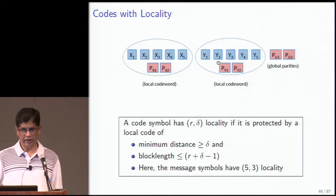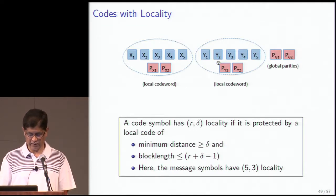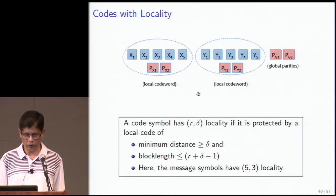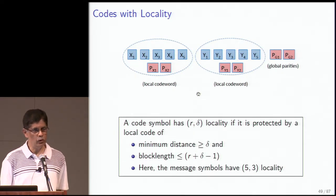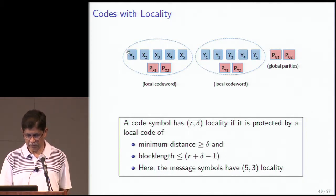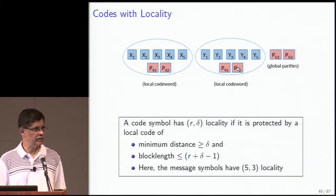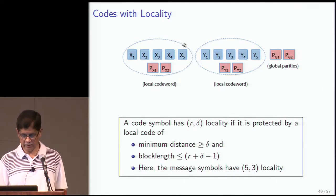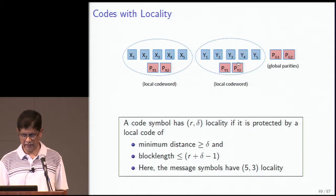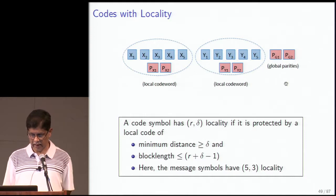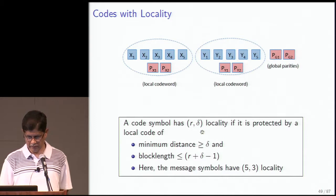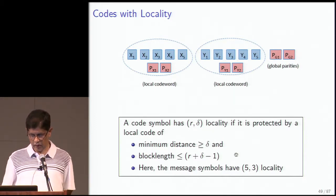Talking to nodes means dealing with traffic and reading in and out of disks. The goal is to keep the number of nodes contacted small. One way to do that is to build a global code constructed out of smaller local codes. For example, blue squares represent message symbols and pink represent parity symbols. A dotted circle indicates a local code — protected by two parity symbols. There are also additional global parities.